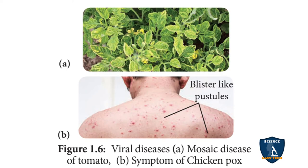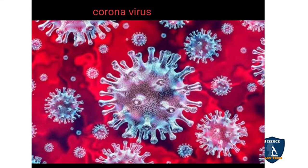You can see in plants the mosaic disease in tomato. And here are the symptoms of chickenpox — the blister pustules — and most of them have had an experience of chickenpox. And this is the coronavirus, which is attacking the human world now. It is a dreadful disease which causes death and panic in human beings.